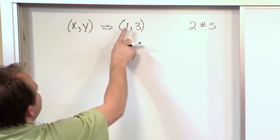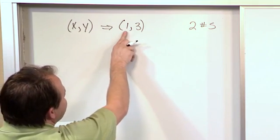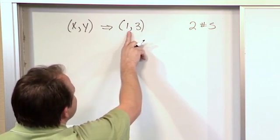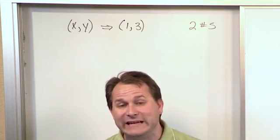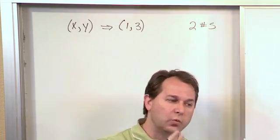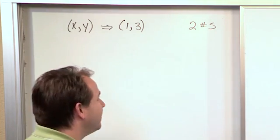So the ordered pair 1 comma 3, we know that it's implied that it means x is equal to 1, y is equal to 3. The comma serves to separate those two numbers so that we know that they're separate. So it's not 13, it's 1 and it's 3. The 1 goes with x, the 3 goes with y. I know this is pretty basic stuff but I'm leading to something.